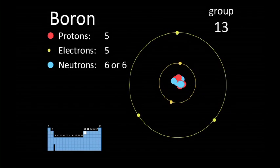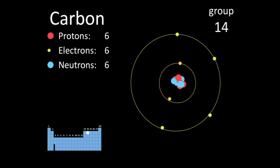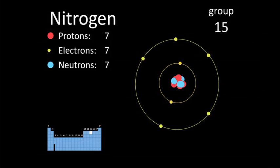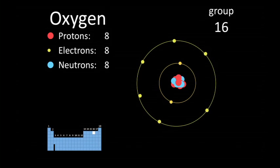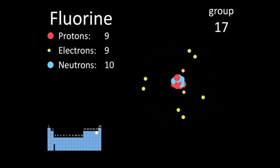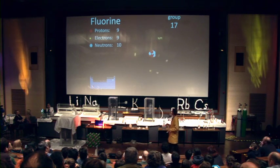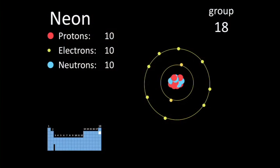Boron has three electrons in its outermost shell. Carbon here has four. Nitrogen has five electrons. Oxygen has six electrons in its outermost shell. Fluorine has seven electrons in its outermost shell. There's two in the middle as well, so there's nine in total, but seven in the outermost shell. Neon has eight in the outermost shell, and that's full up now.